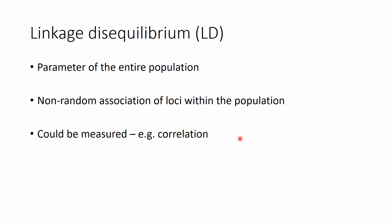It is a non-random association between the loci within this population, which can be measured, so we can tell that two loci are strongly linked, weakly linked, or not linked at all.